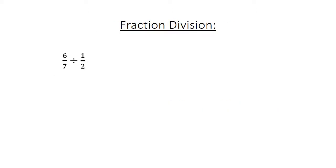Fraction division: 6 over 7 divided by 1 over 2 equals 6 over 7 times 2 over 1 equals 12 over 7, equals 1 and 5 over 7.